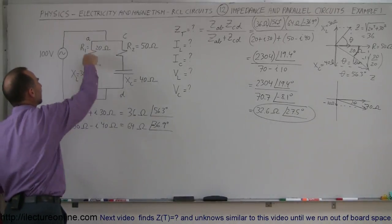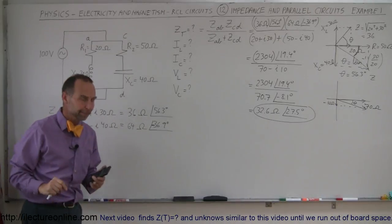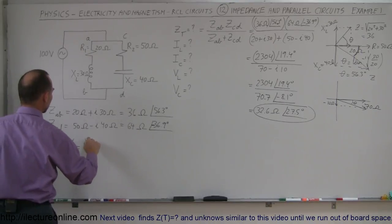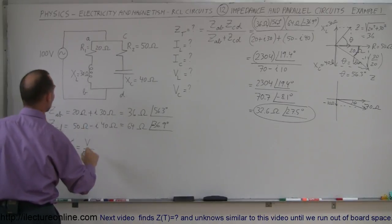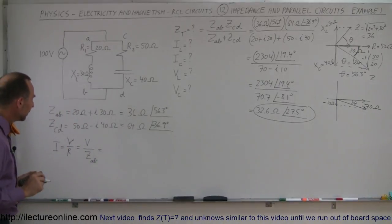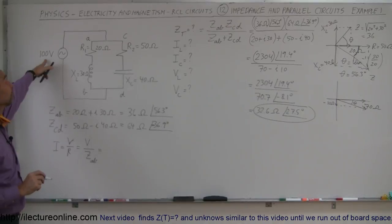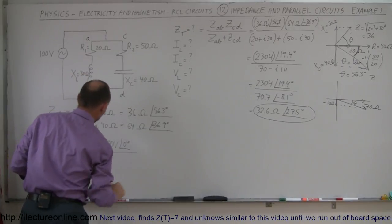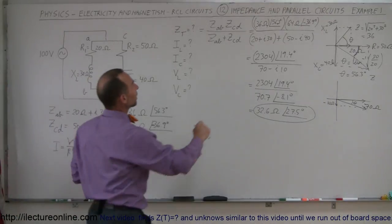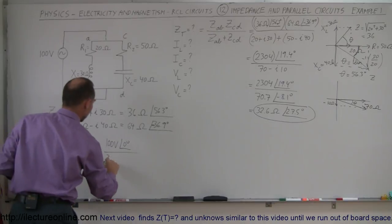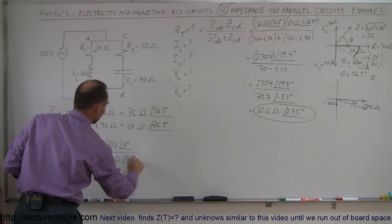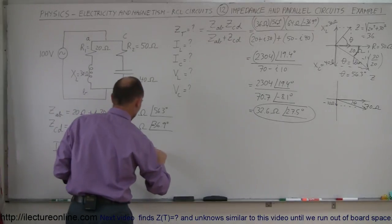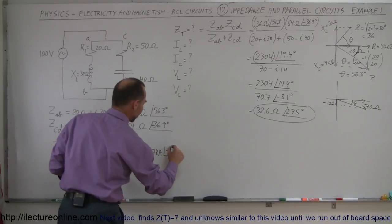To find the current through the inductor branch, we use Ohm's law: I equals V over Z. The voltage across the parallel branch equals the source voltage — 100 volts at 0 degrees — divided by the impedance from A to B, which is 36 ohms at 56.3 degrees. So the inductor branch current is 100 divided by 36, which is 2.78 amps at a phase angle of minus 56.3 degrees.